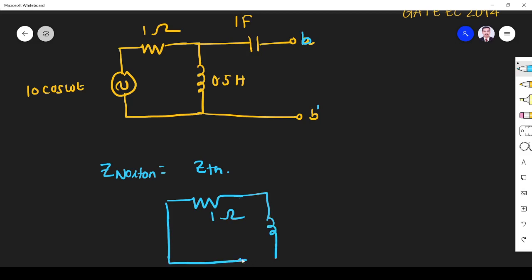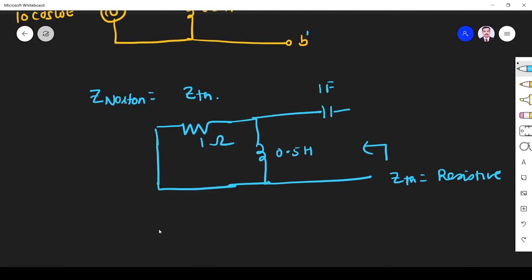...one ohm, then it is 0.5 H and one farad. And they told that Norton impedance, or Z_N, is purely resistive. Purely resistive means what? There is no imaginary part.